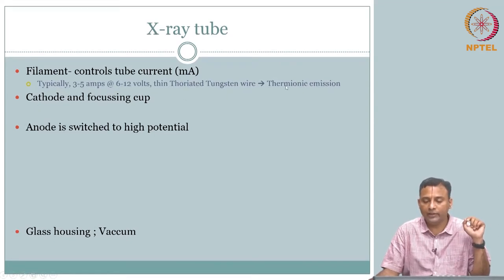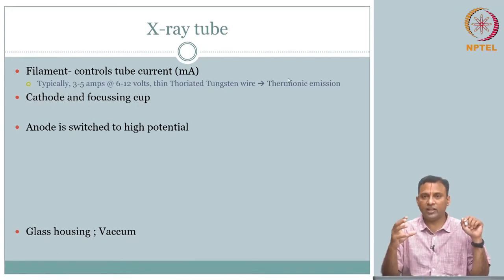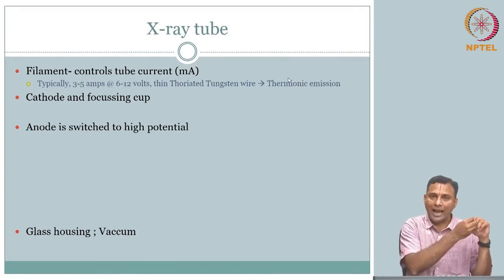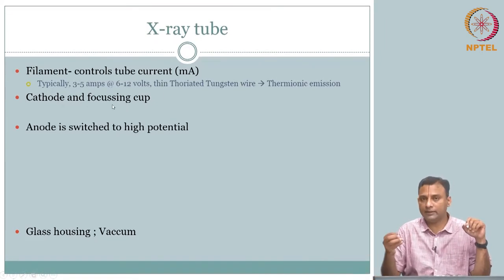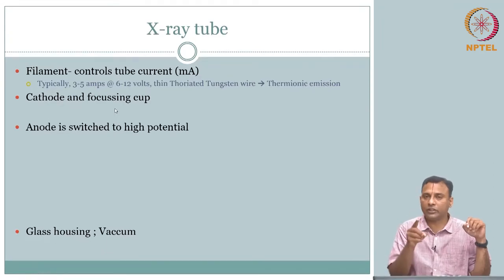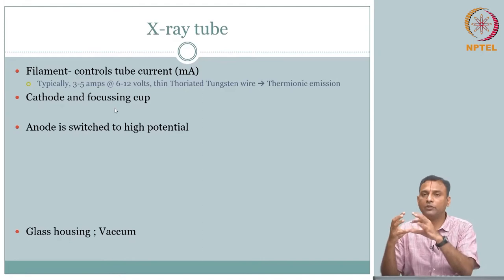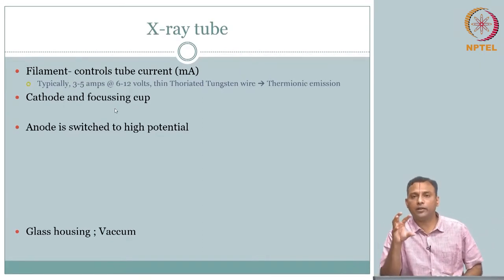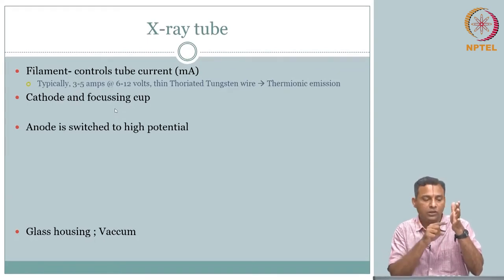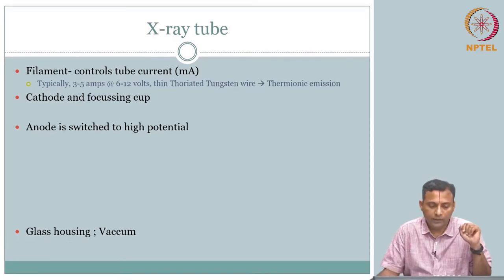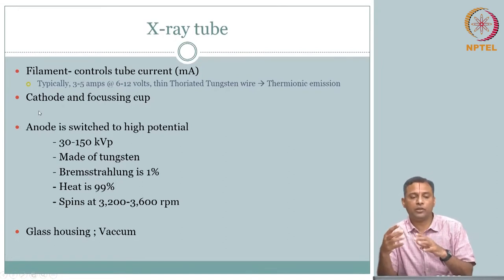Using thermionic emission you get the free electrons. By varying the filament circuit you can have the electrons ready — free electrons on the cathode side are created. Then you have the focusing cup, which directs all the electron cloud in the direction you want, straight into the anode surface where you want to hit it. At this point we say the x-ray tube is primed — electrons are ready.